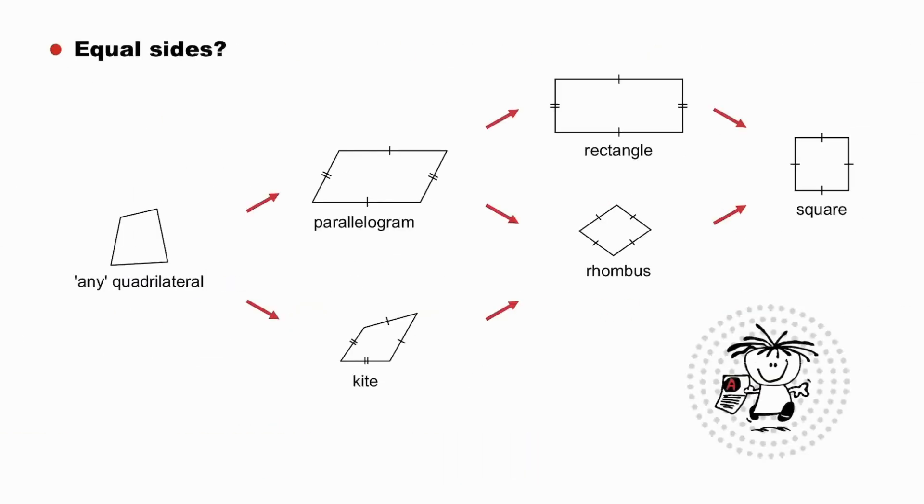Equal sides? Pause to view this aspect along all the routes. From any quadrilateral to a kite, where we have two pairs of adjacent sides equal. Through to the rhombus, where all four sides are equal. This is true for a square, since a square is actually just a special rhombus. From any quadrilateral to the parallelogram, where we have two pairs of opposite sides equal. And therefore, this is also true for the rectangle.